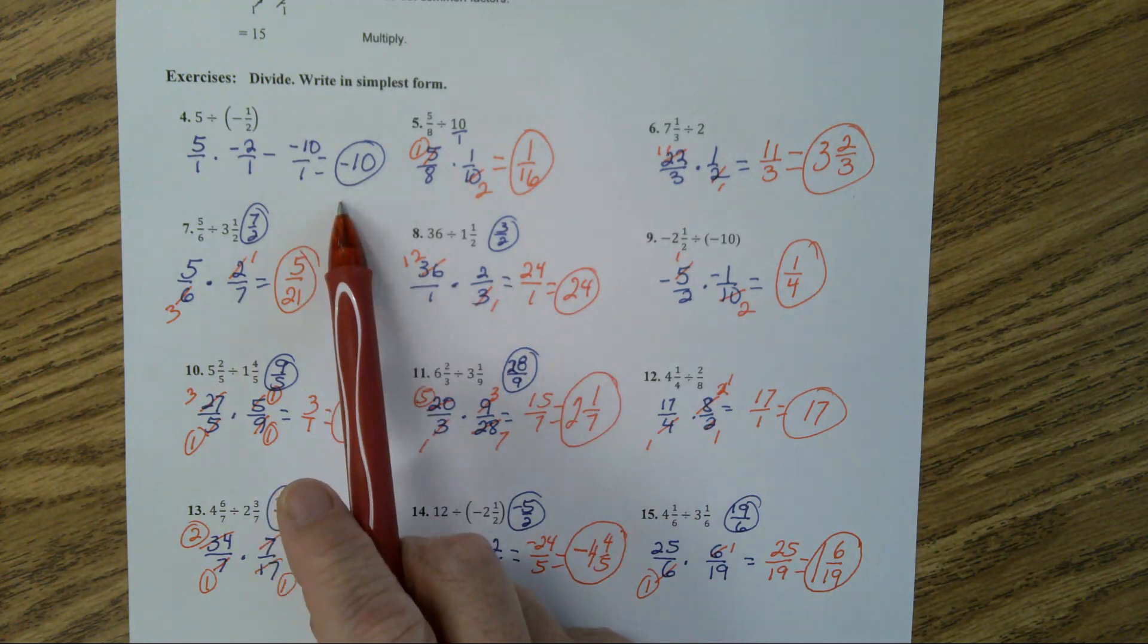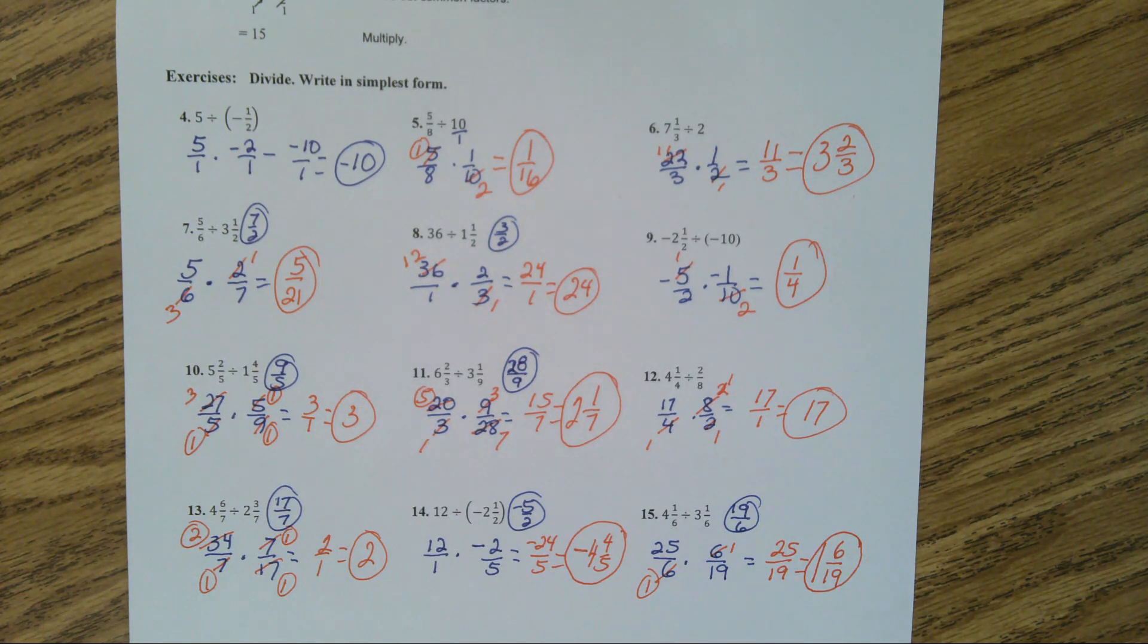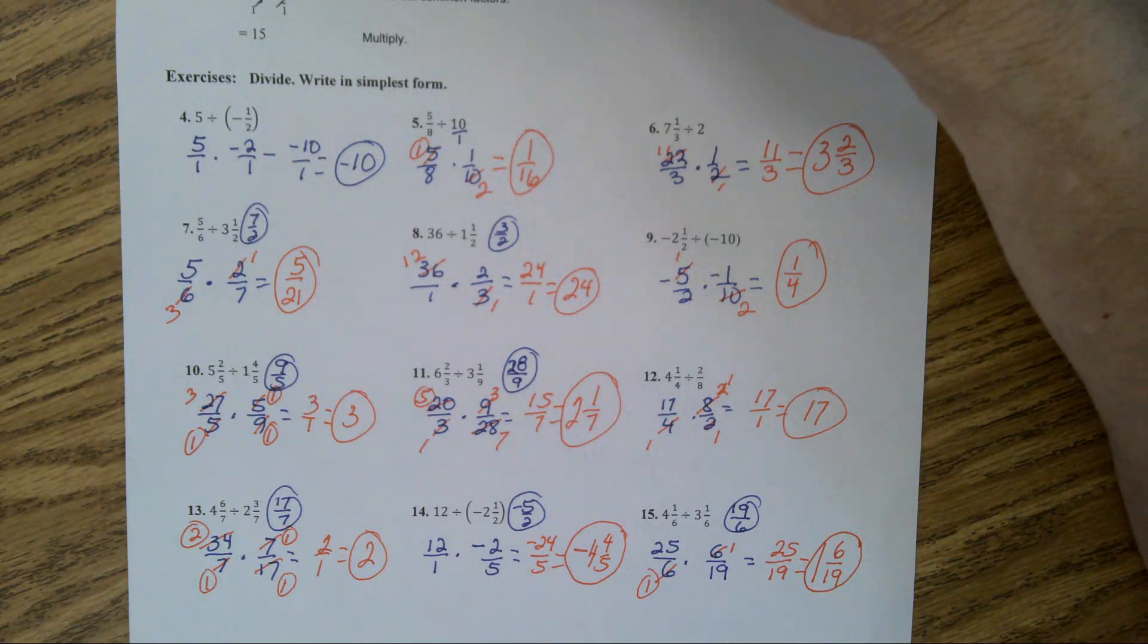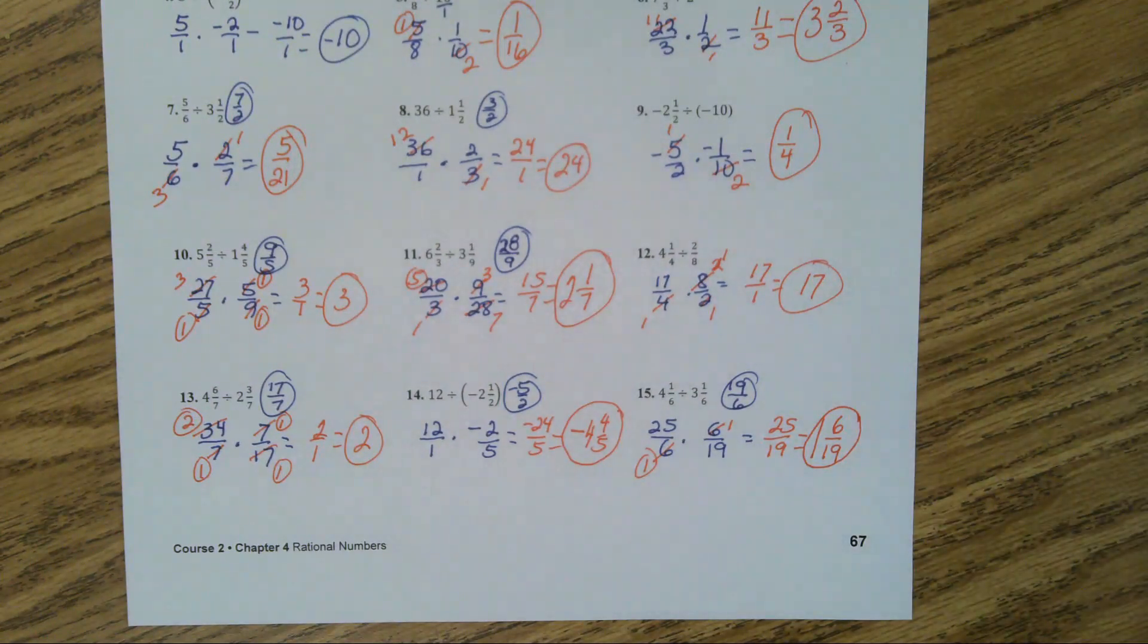Negative 10, 1 sixteenth. Number 6 is 3 and 2 thirds. 7 is 5 over 21. 8 is 24. 9 is 1 fourth. Number 10, 3. Number 11, 2 and 1 seventh. Number 12, 17.